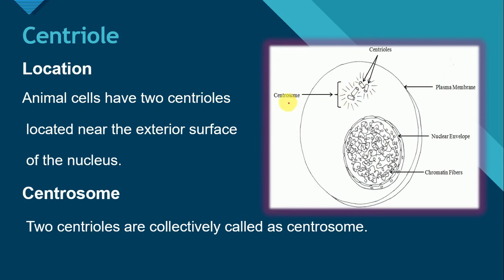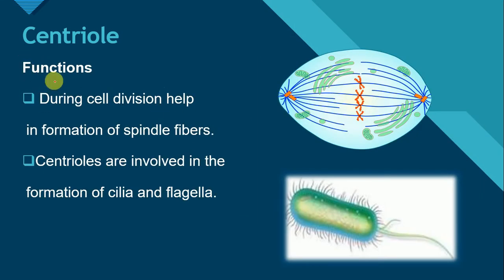Let's see the functions of centrioles. During cell division, centrioles help in the formation of spindle fibers in eukaryotic animal cells. Centrioles are also involved in the formation of cilia and flagella, which are locomotory organs in unicellular organisms like Euglena, Paramecium, and many other unicellular organisms.